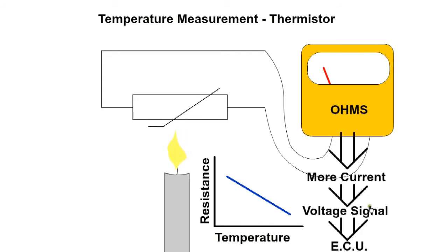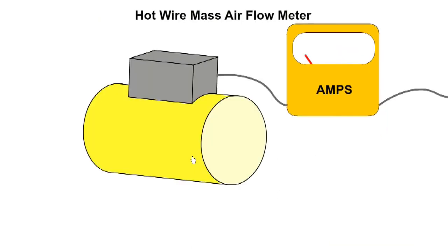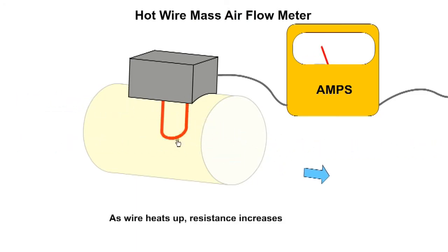The hot wire mass airflow sensor (MAF) measures the flow of air into the engine. Inside the housing, we see an electric wire which is heated by electric current and maintained at a constant temperature. When the engine is started, current passes through the wire and heats it up. As the wire heats, its resistance increases and it limits current flow. An equilibrium point is reached between the heating effect of the wire and the cooling effect of the moving air.